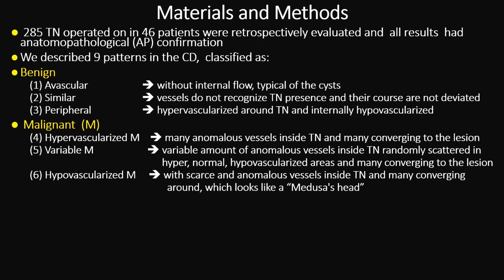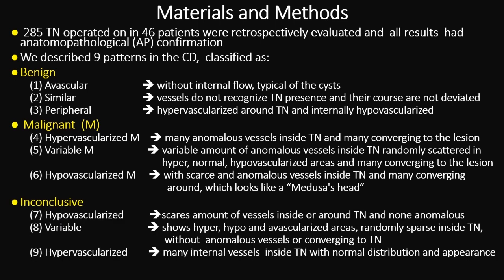In all three malignant patterns, we consistently see many vessels converging into the lesion, and anomalous vessels are also seen inside. We also describe three inconclusive patterns: hypovascularized, with a scarce amount of vessels inside or around the thyroid nodule and none are anomalous; variable, with a variable amount of vessels randomly sparse inside the thyroid nodule, some areas hyper- and others hypo-vascularized, without any anomalous or converging vessels; and hypervascularized, with many internal vessels but normal distribution and appearance.